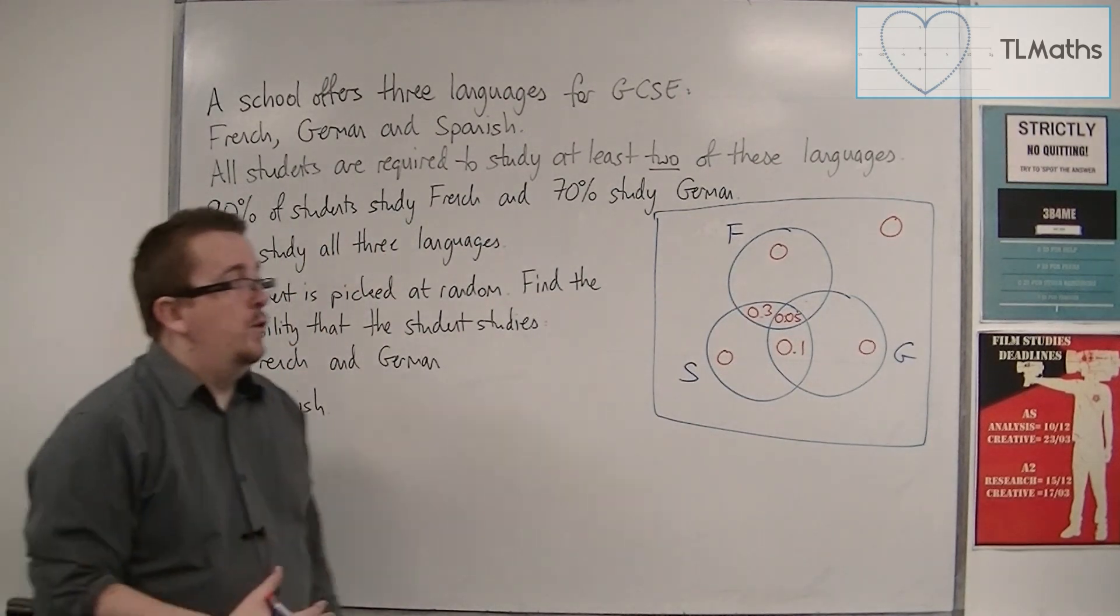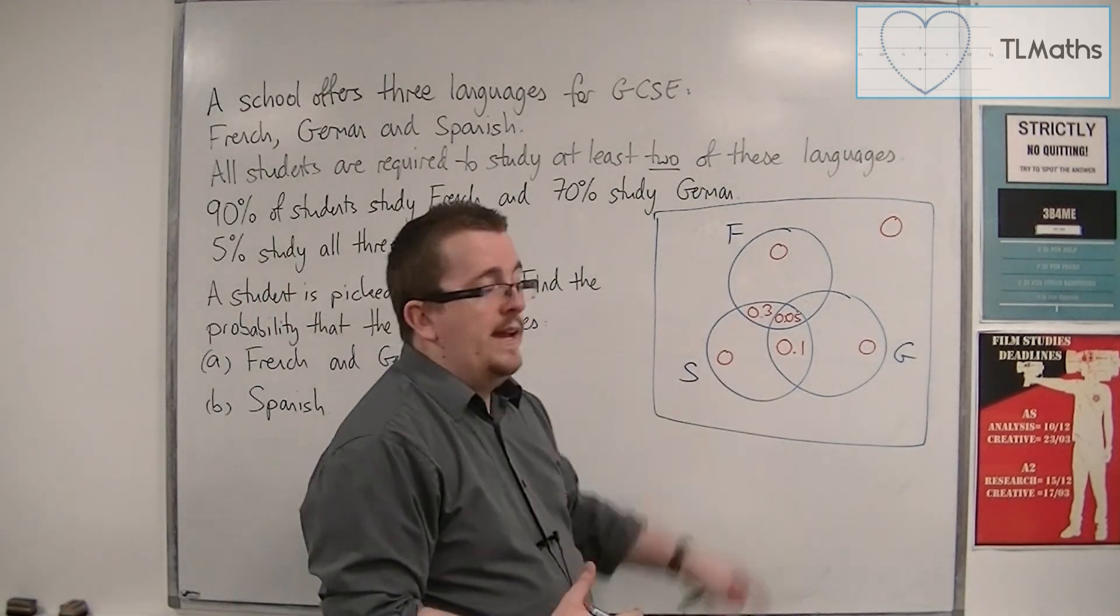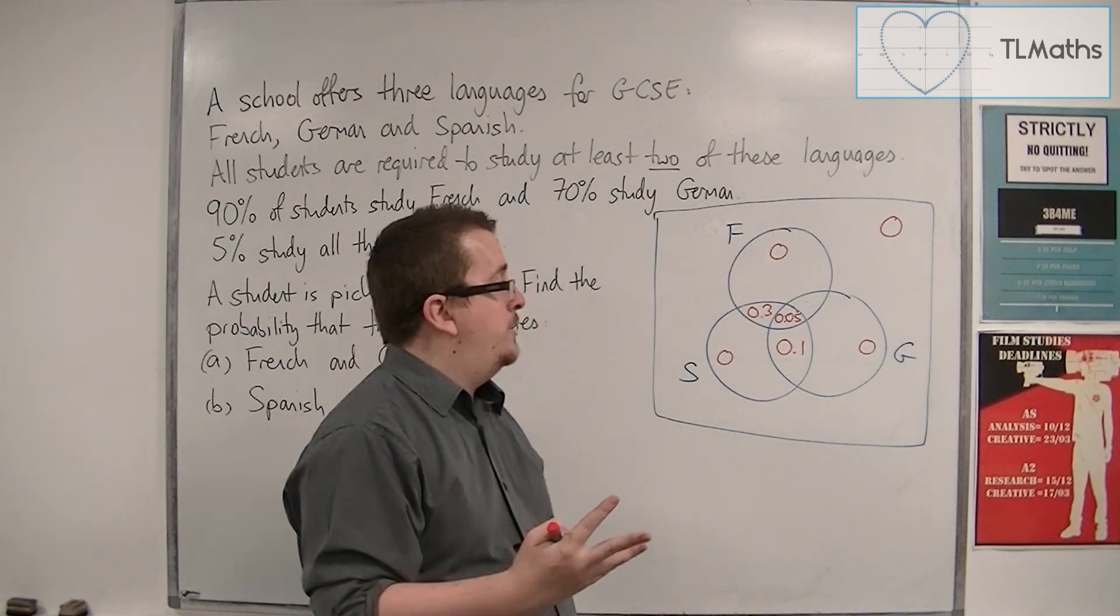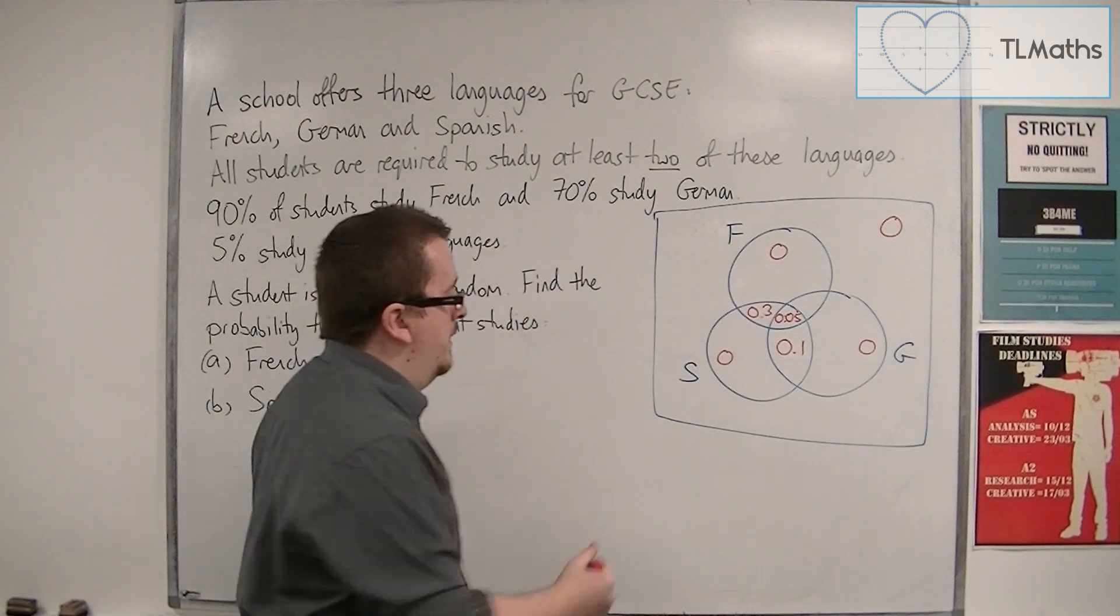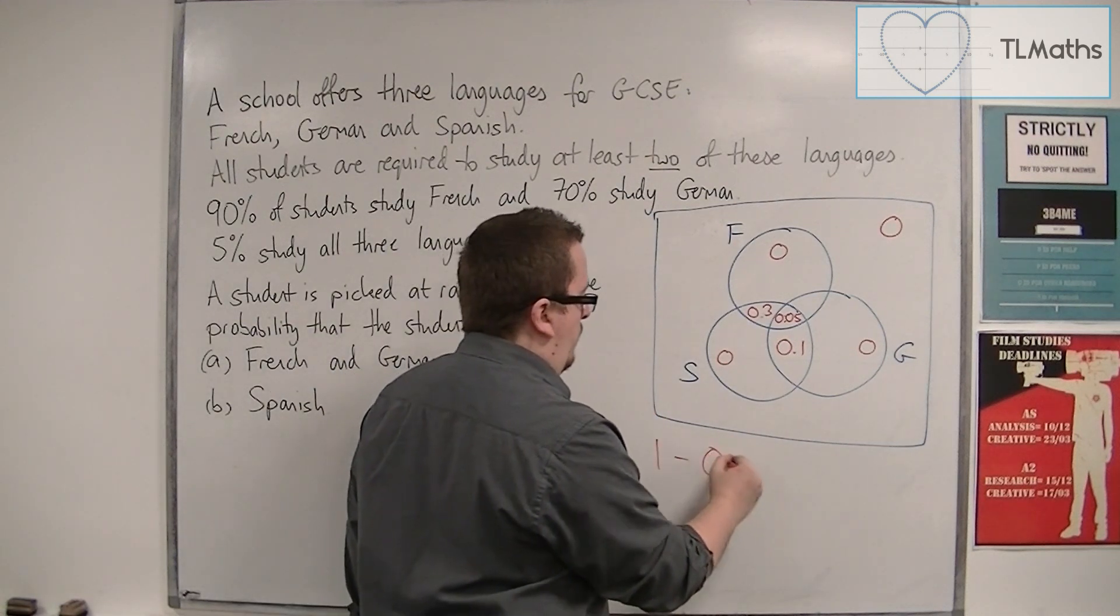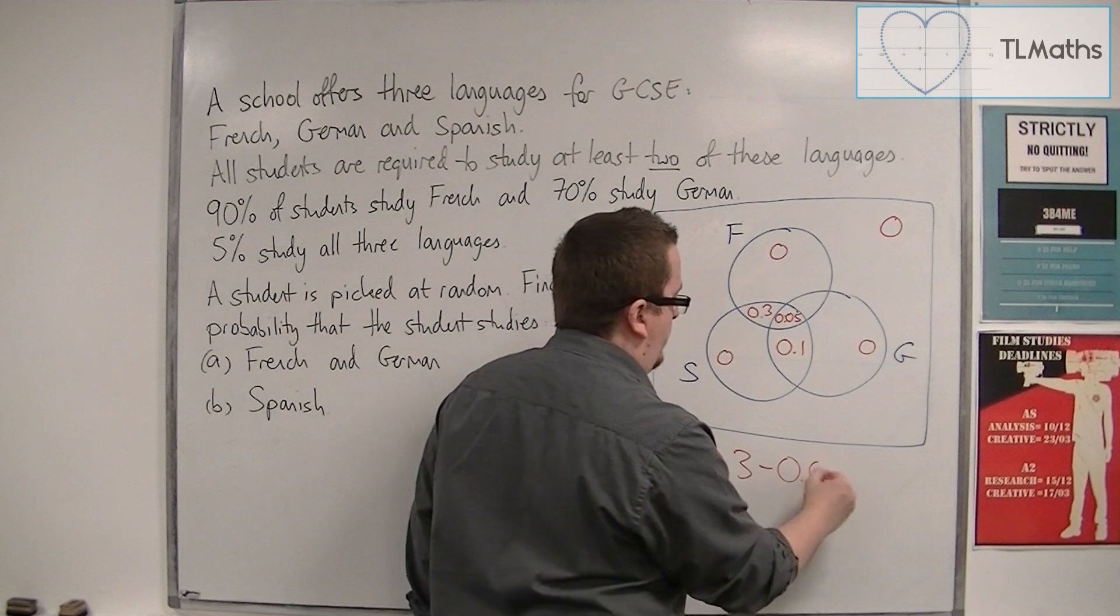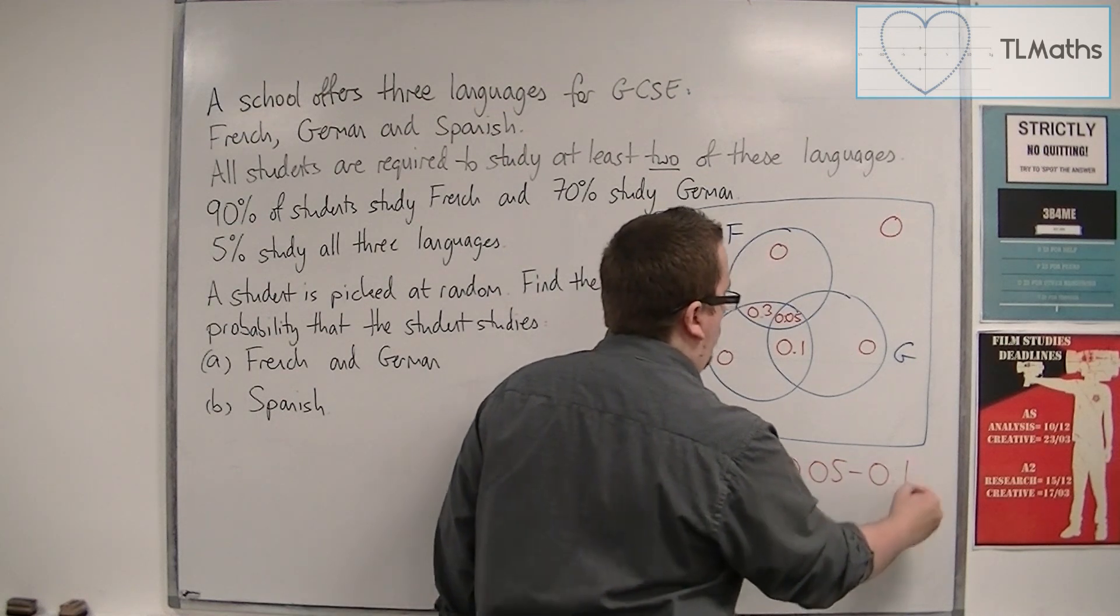And so because we've got three out of the remaining four sections, we can work out the final one by subtracting these three from one. So 1 take away 0.3, take away 0.05, take away 0.1.